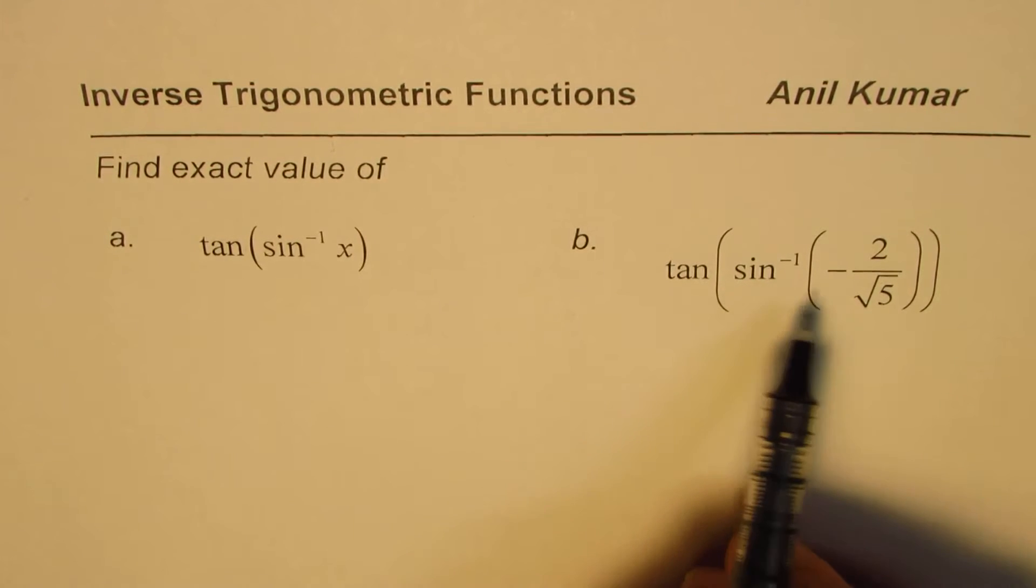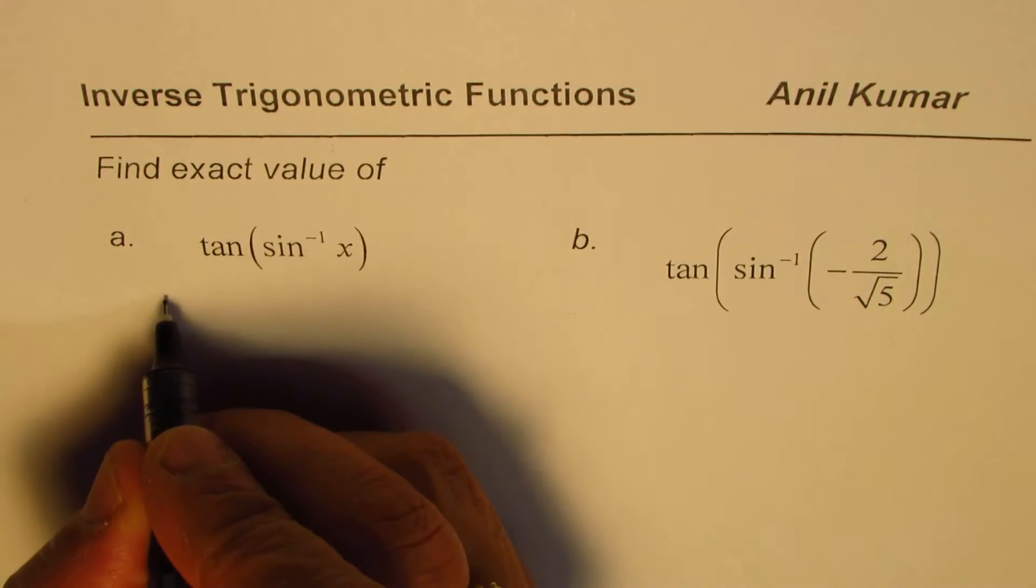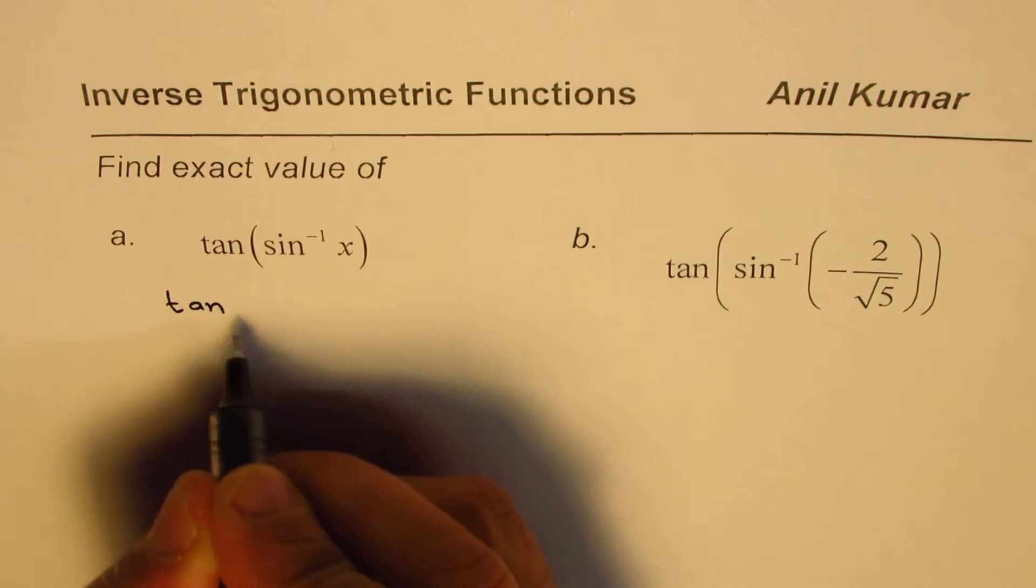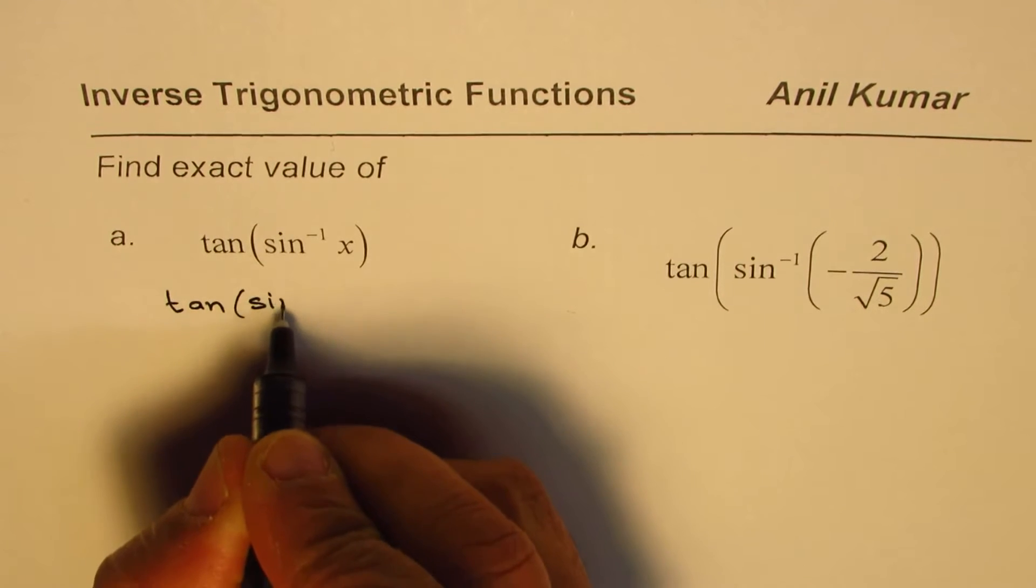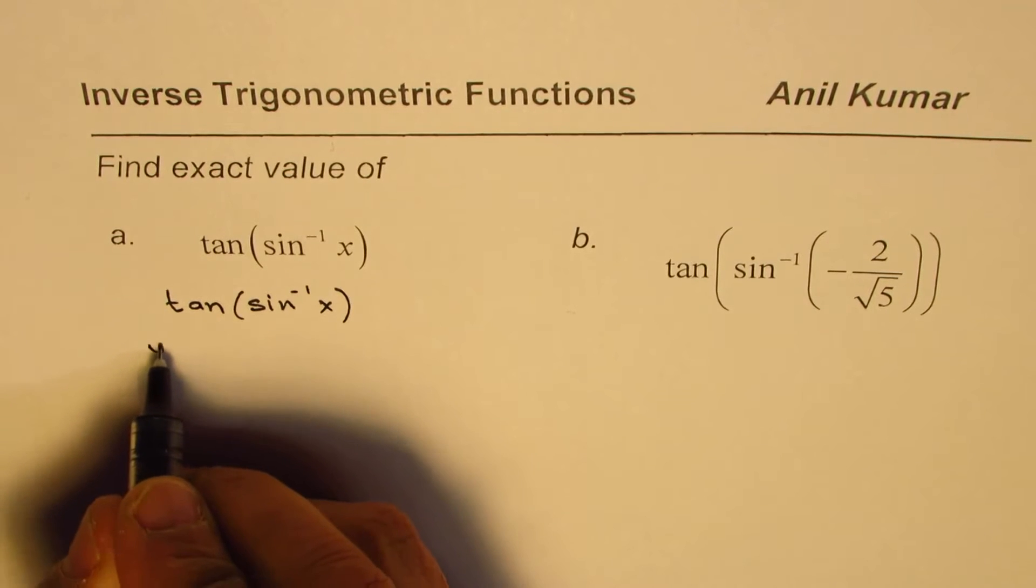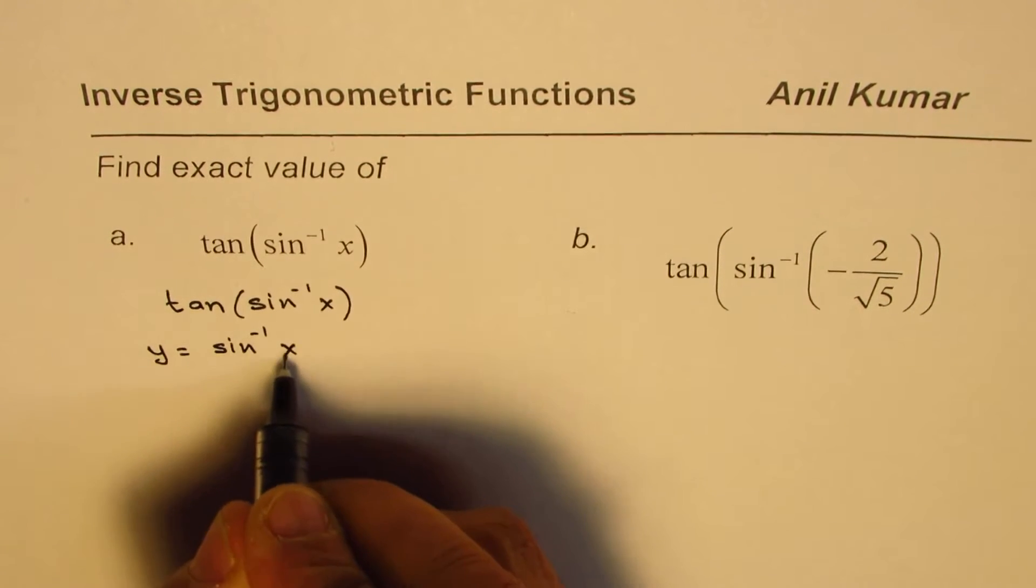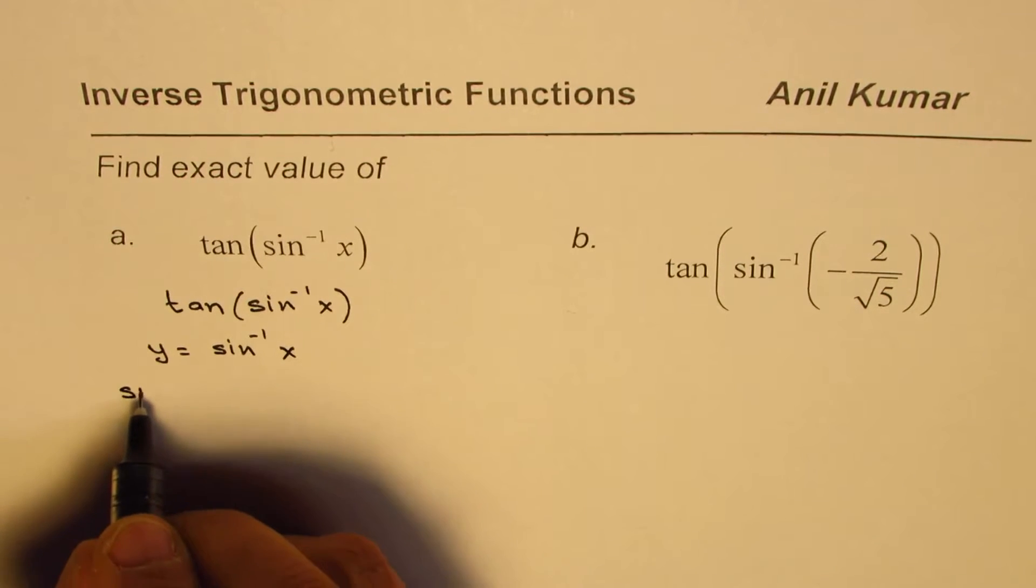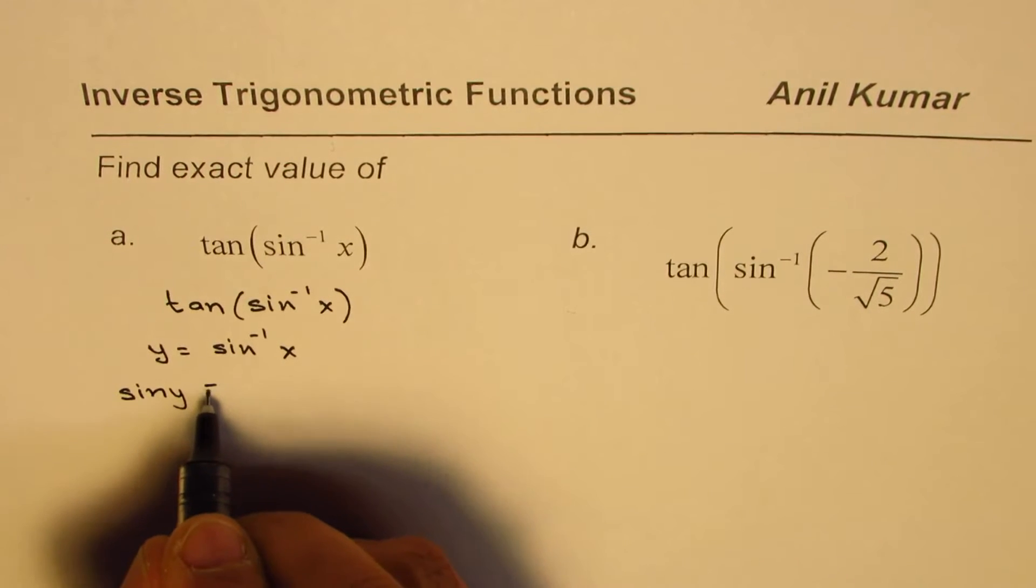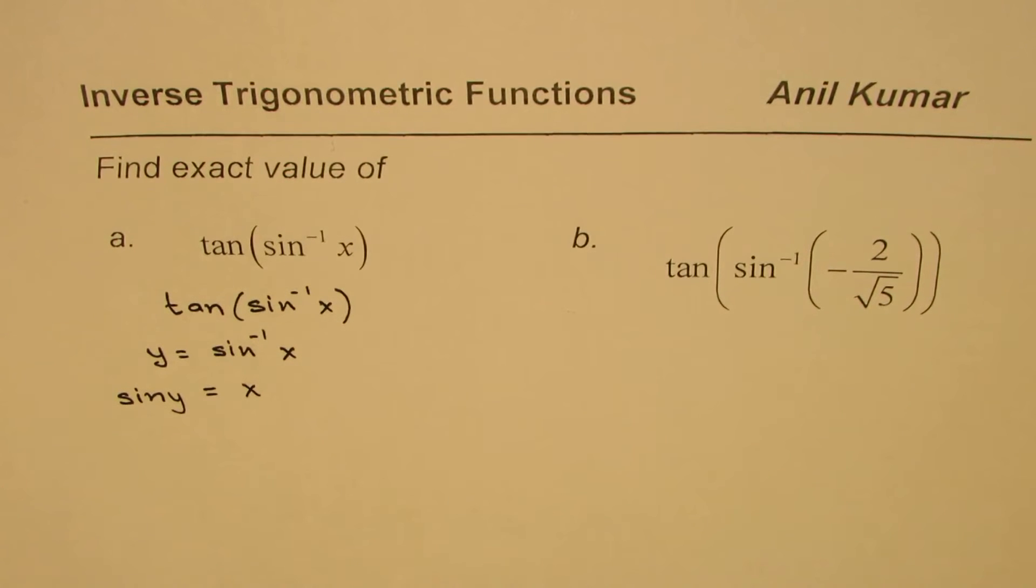If you have to calculate tan(sin⁻¹(x)), what we can do is write y equals sine inverse of x. So in that case sine y will be equal to x. Now if sine y is x, it can be represented with the help of a right triangle.